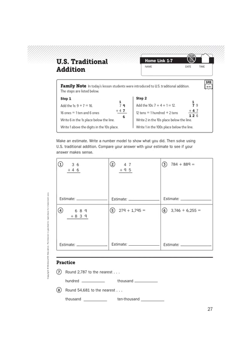So we are going to be doing some calculations. Up here at the top where it says Family Note, it will walk you through how to do traditional edition algorithms, which we are going to model right now.